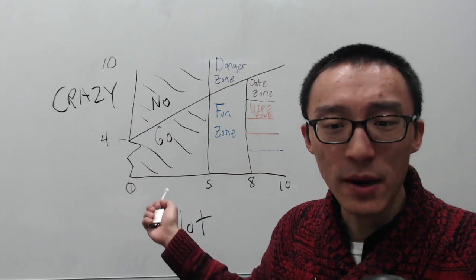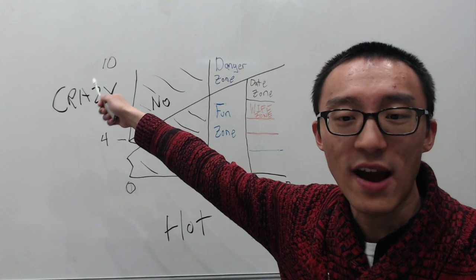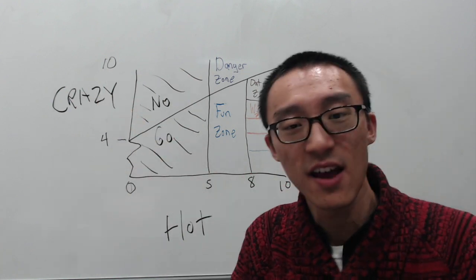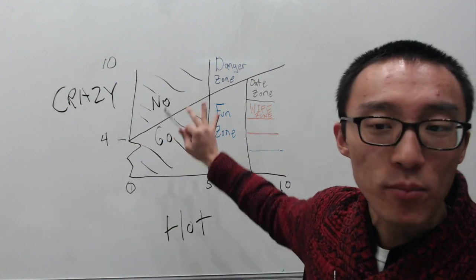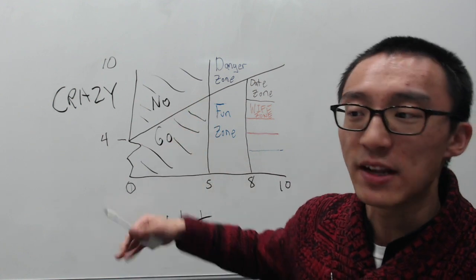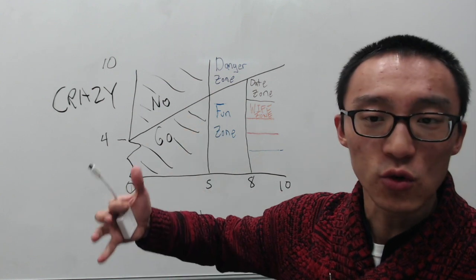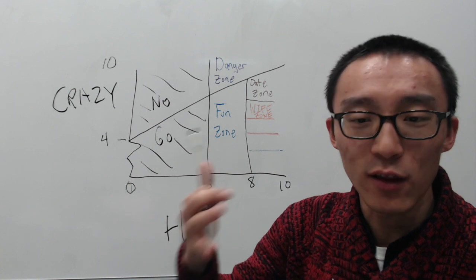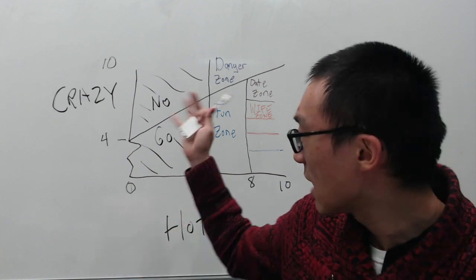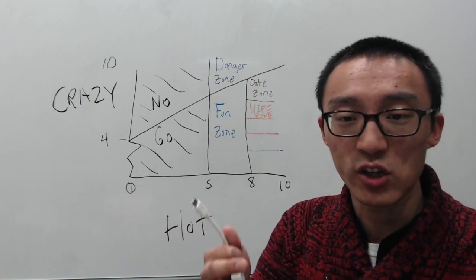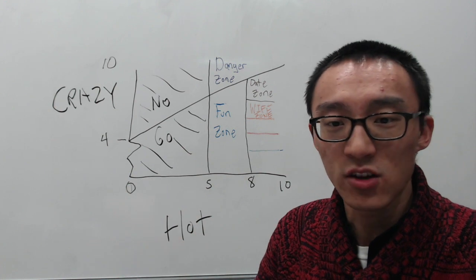This is called the Crazy Hot Matrix, also known as the Hot Crazy Matrix. I call it the Crazy Hot Matrix because crazy is on the y-axis and hot is on the x-axis. Basically it's a guide, a normative guide. It's not supposed to represent the population of women, but it's just a normative guide as in this is what you should do, what ought to happen if you want to look for a mate or a woman in your life.